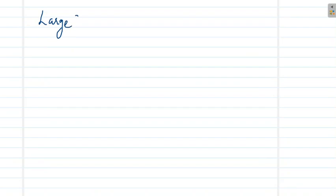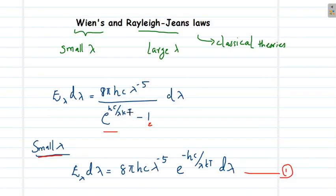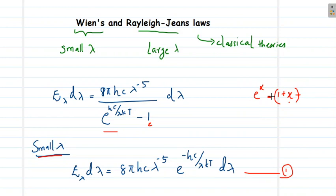Now let us see what happens at large values of λ. When λ is large, the term hc/λkT will be very small, so e^(hc/λkT) is a small value and you cannot neglect that term. When x is very small, the exponential e^x can be expanded as a series: e^x = 1 + x + x²/2 + …, and if x is very small, we can take the first two terms and approximate e^x ≈ 1 + x. I will use this approximation for large values of λ.